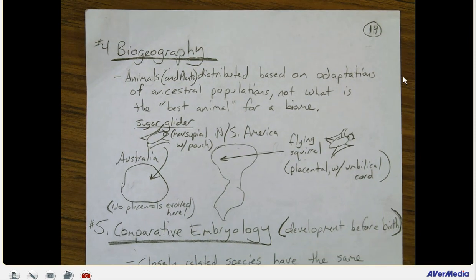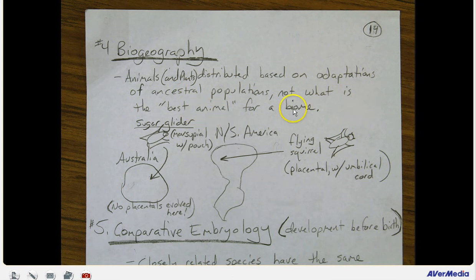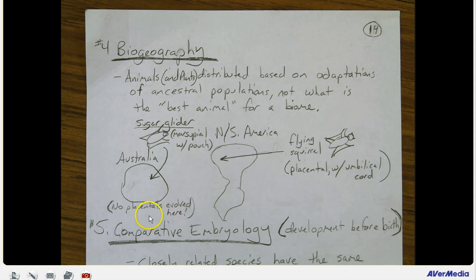Biogeography. Animals and plants are distributed based on adaptations of ancestral populations — like the marsupials in Australia — not based on what is the best animal for a biome. It would actually be better to be a placental animal in Australia. Whenever placental animals come to Australia, they outcompete the native marsupial animals. Right now there are tons of rabbits in Australia — placental mammals from North and South America brought over by humans — and they are replacing many native marsupial species.